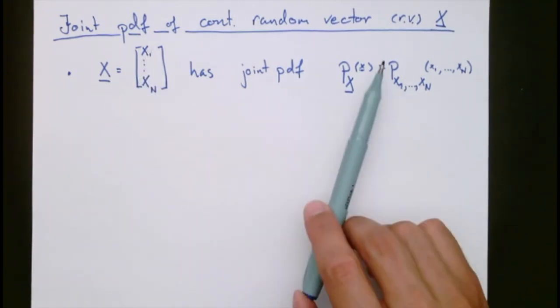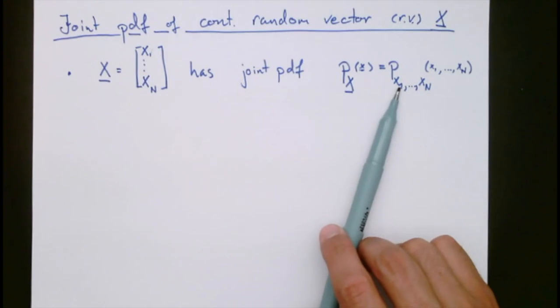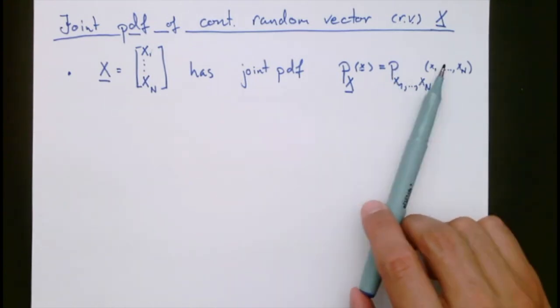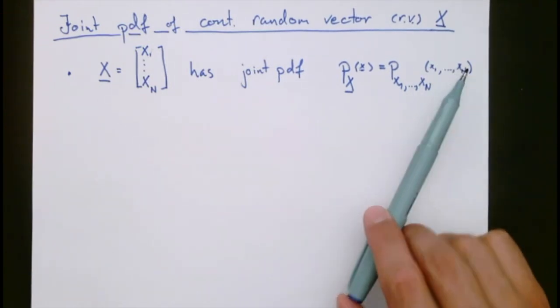We evaluate typically px of some dummy variable little x, or px1 through pxn at the value of the dummy variables little x1 through little xn.